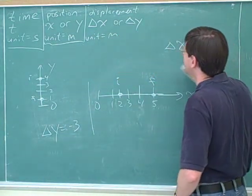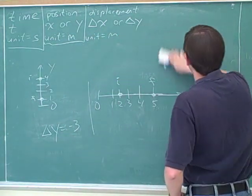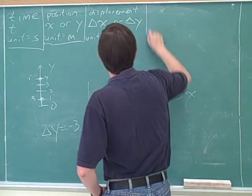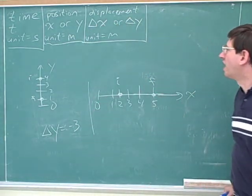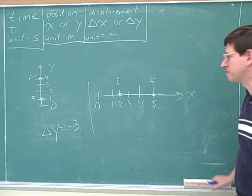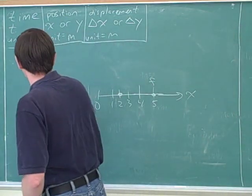Rather than doing 1 minus 4, I would just say, clearly we're moving 3 steps, and we're moving in the negative direction. So that would give us negative 3. That's not giving you any trouble, so now we understand displacements. All right. Now, the key concepts are velocity and acceleration.